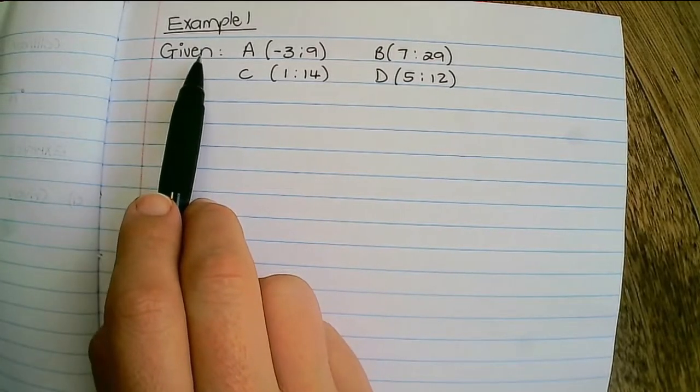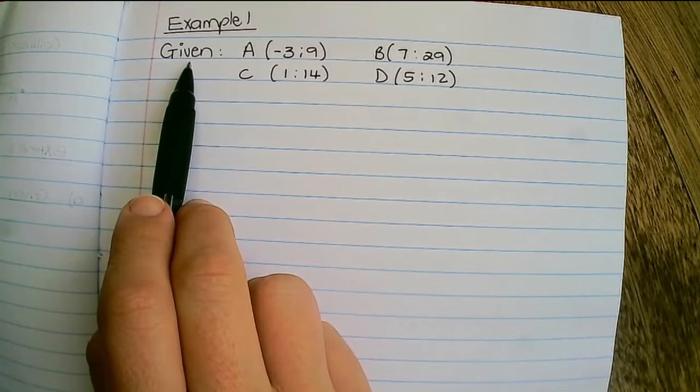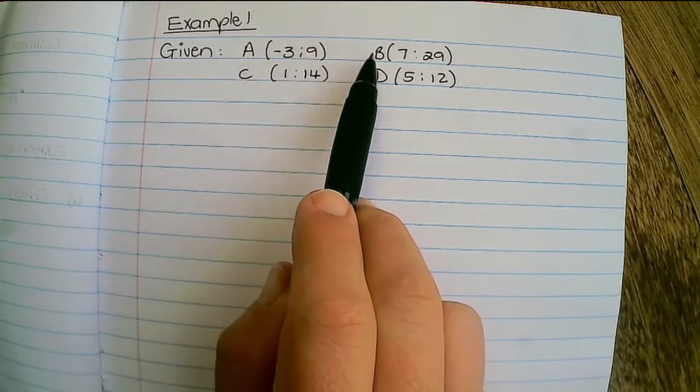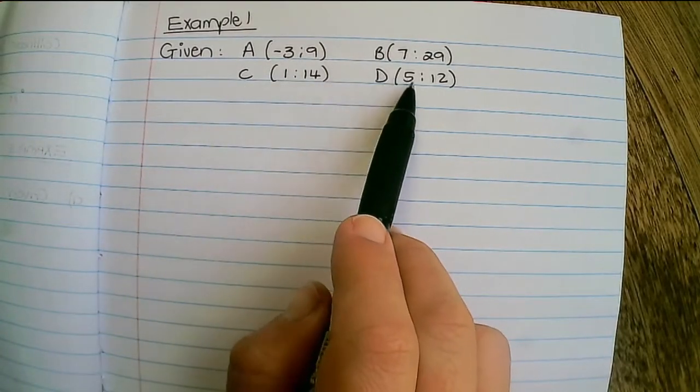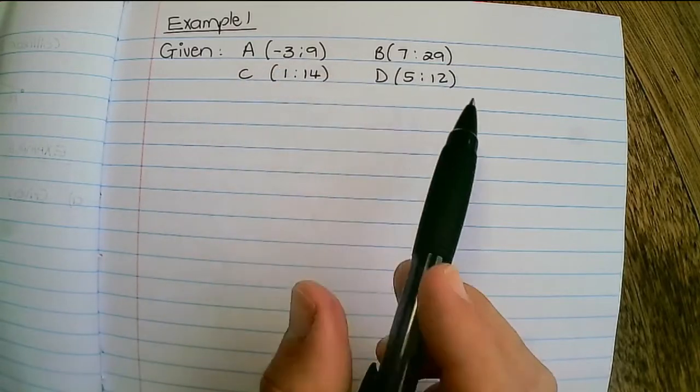Let's take a look at this example. Let's say we are given the points A, B, C and D with their respective coordinates.